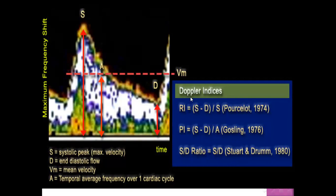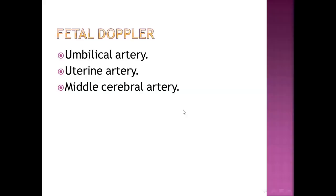To understand Doppler indices: first, the Resistivity Index (RI), introduced in 1975, equals systole minus diastole divided by systole. The RI should not exceed 1. The Pulsatility Index (PI), introduced two years later, equals systole minus diastole divided by the average. Finally, the S/D ratio simply divides systole by diastole.